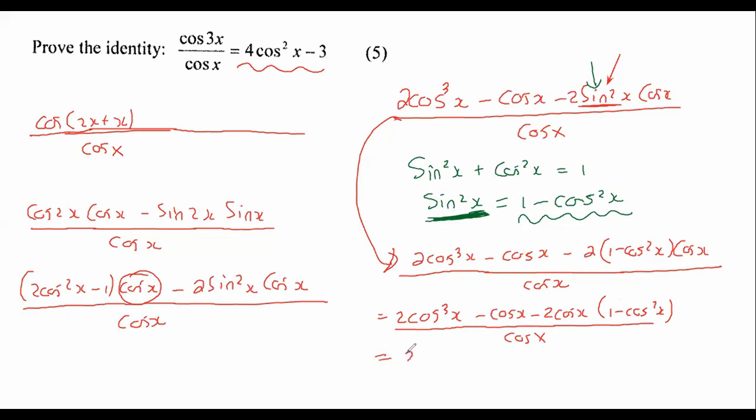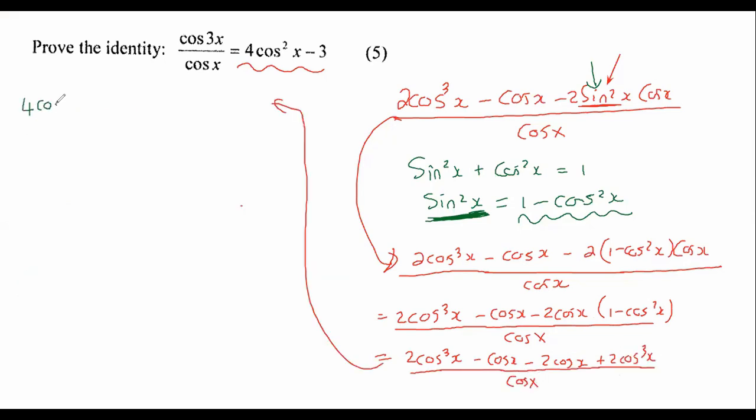Right, now we're just going to go multiply that 2 cos x into the bracket, and then that's over cos x with 4 cos cubed x minus 3 cos x over cos x.